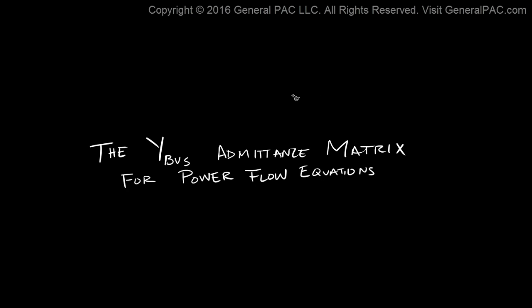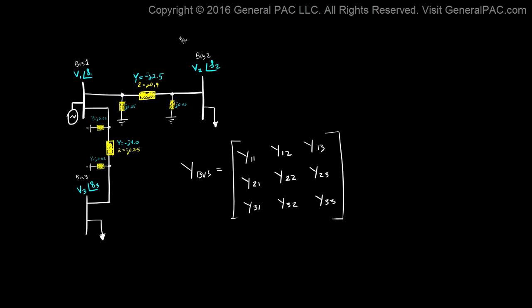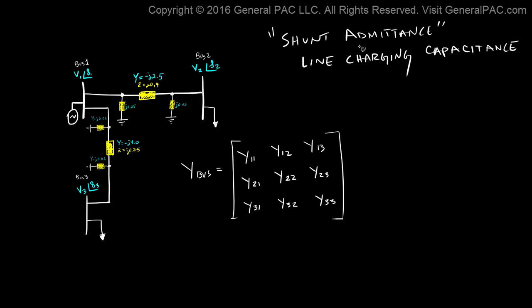This is Part 2 of a tutorial on the Y Bus Admittance Matrix for Power Flow Equations. In Part 1, we drew a 3-bus system, defined all the impedances, and calculated admittances for each transmission line. Both transmission lines were medium length, which means they have shunt admittance modeled by shunt elements — another term for shunt admittance is line charging capacitance.